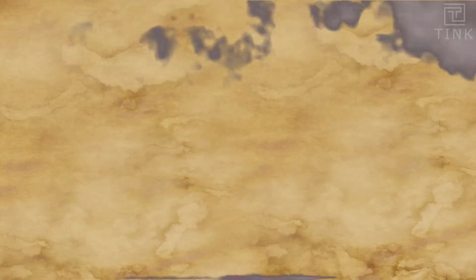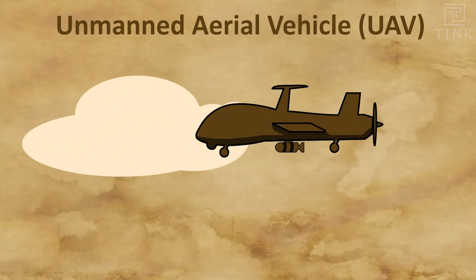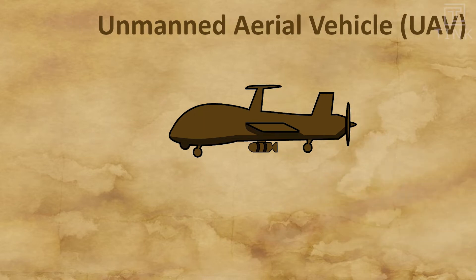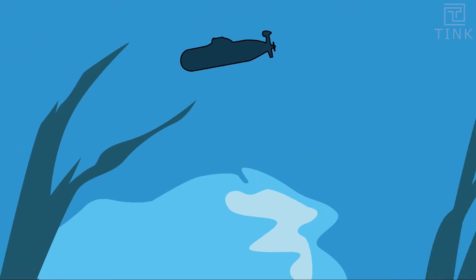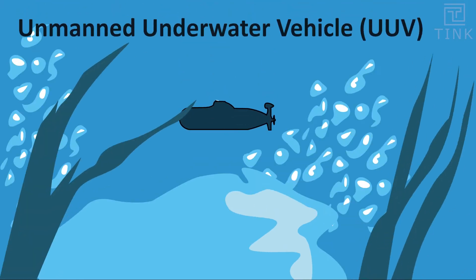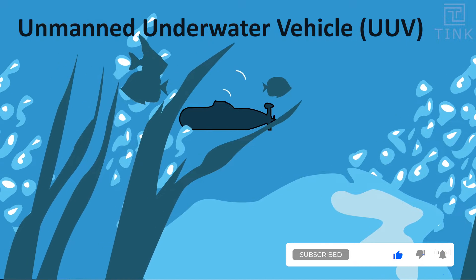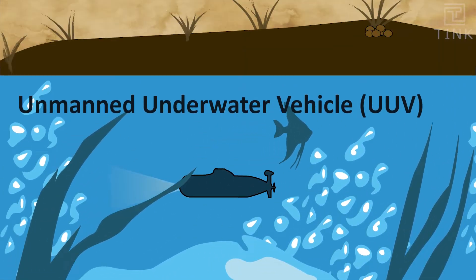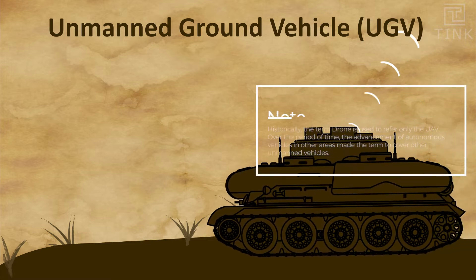We can find these drones. These drones are unmanned aerial vehicles. Drones can also be unmanned underwater vehicles. There are also drones that are unmanned ground vehicles.